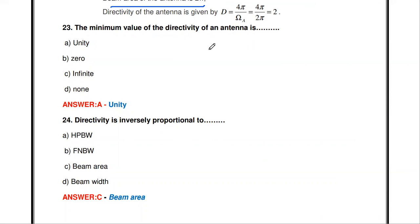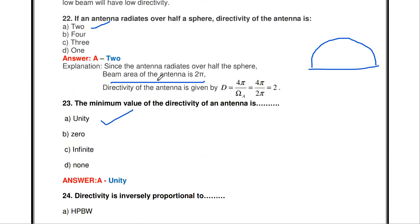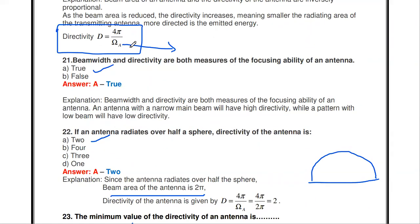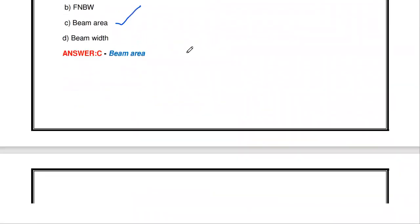The minimum value of directivity of an antenna is unity (1). The directivity is inversely proportional to — HPBW, beam width between first nulls, beam area, or beam width? The answer is beam area, from the relation D = 4π / ΩA. Directivity and beam area are inversely proportional.